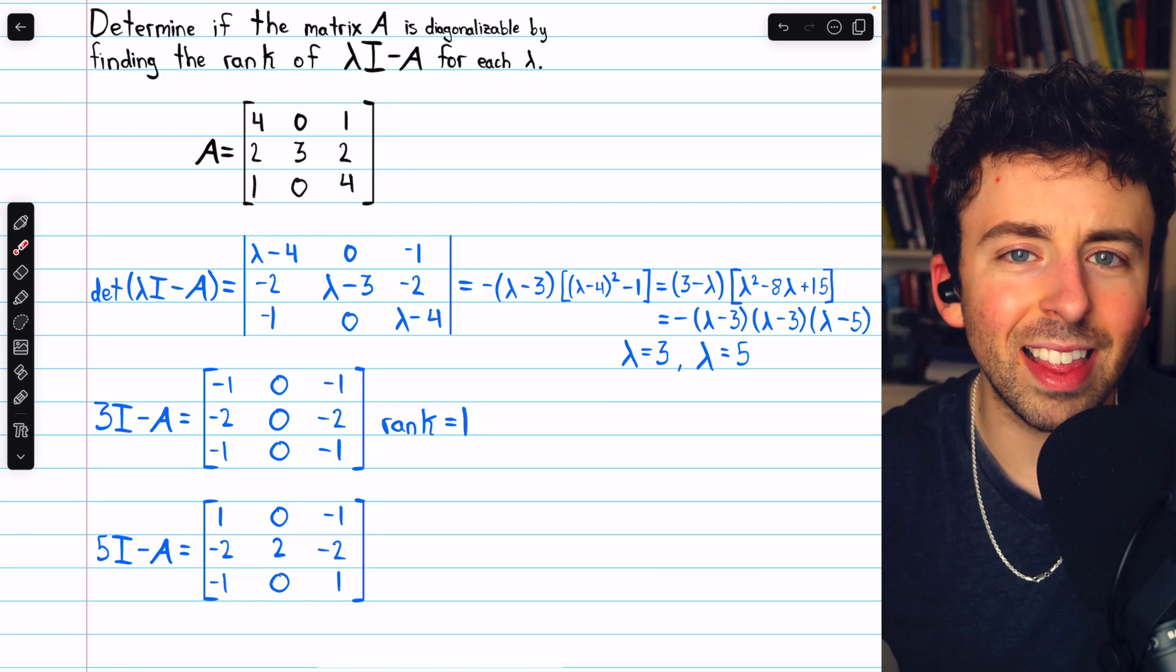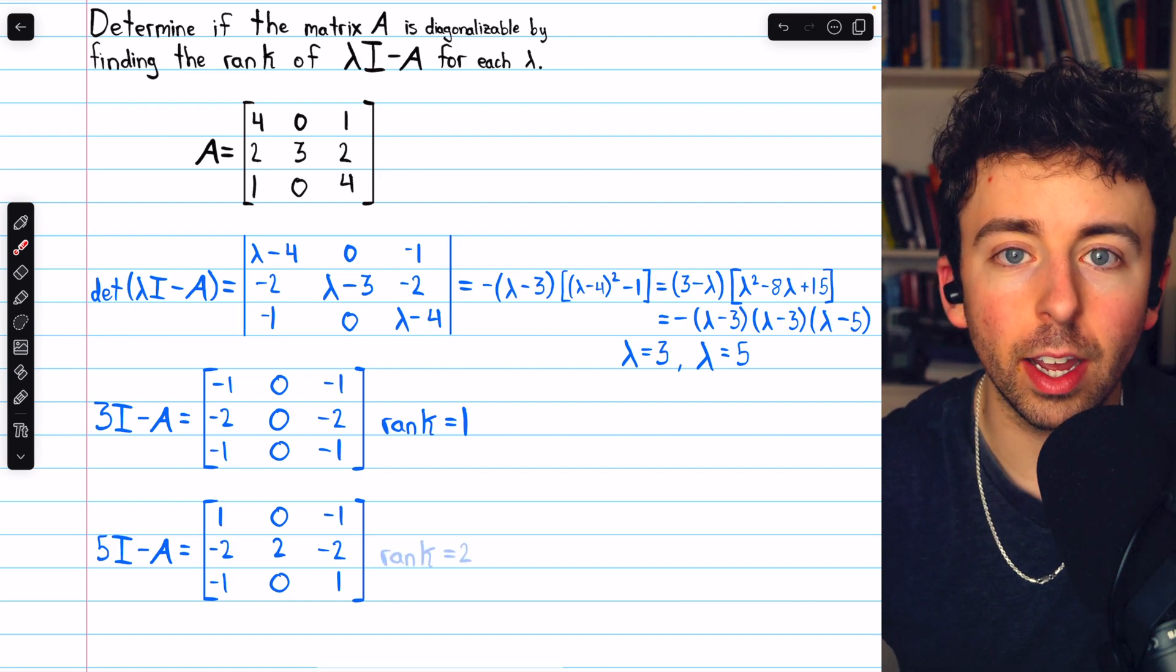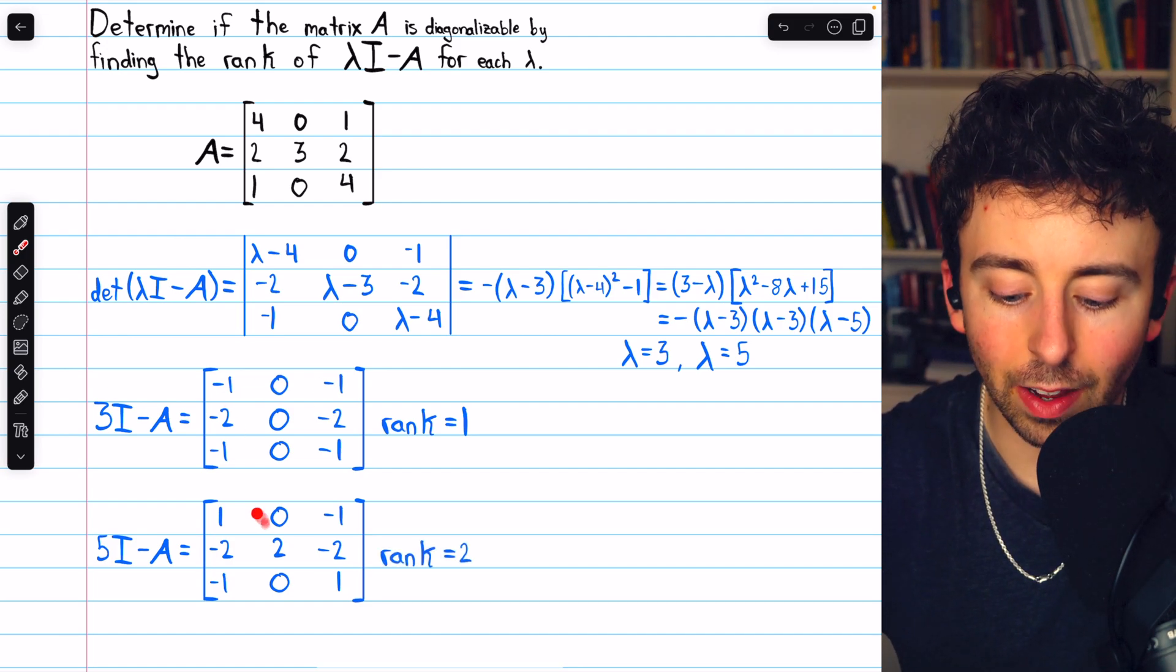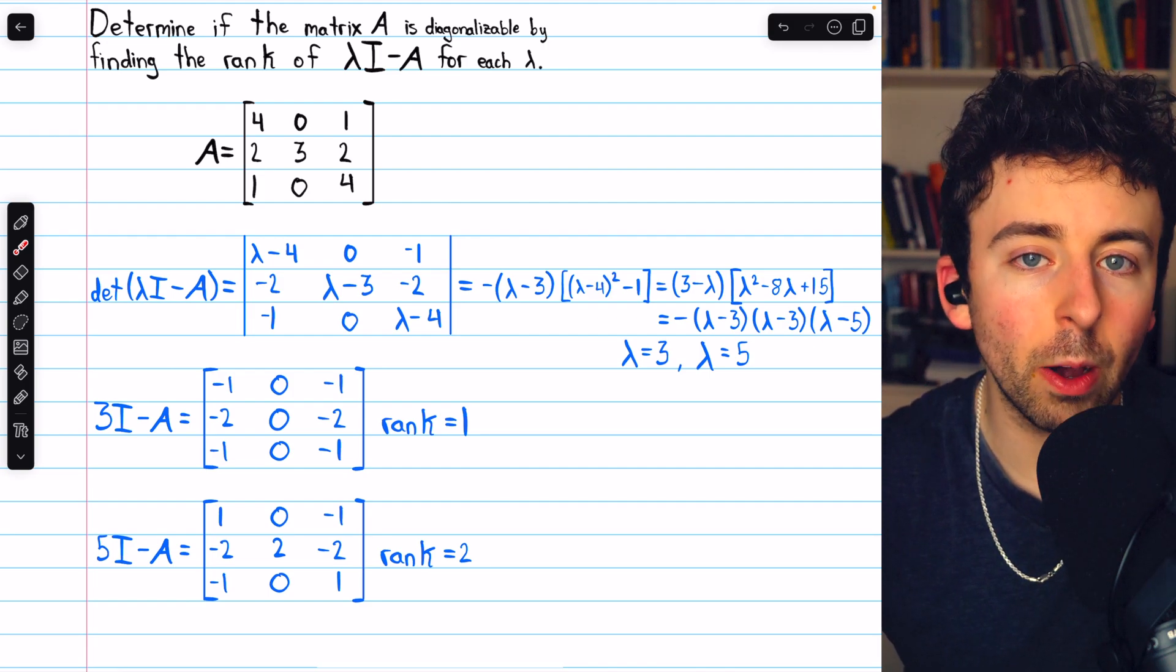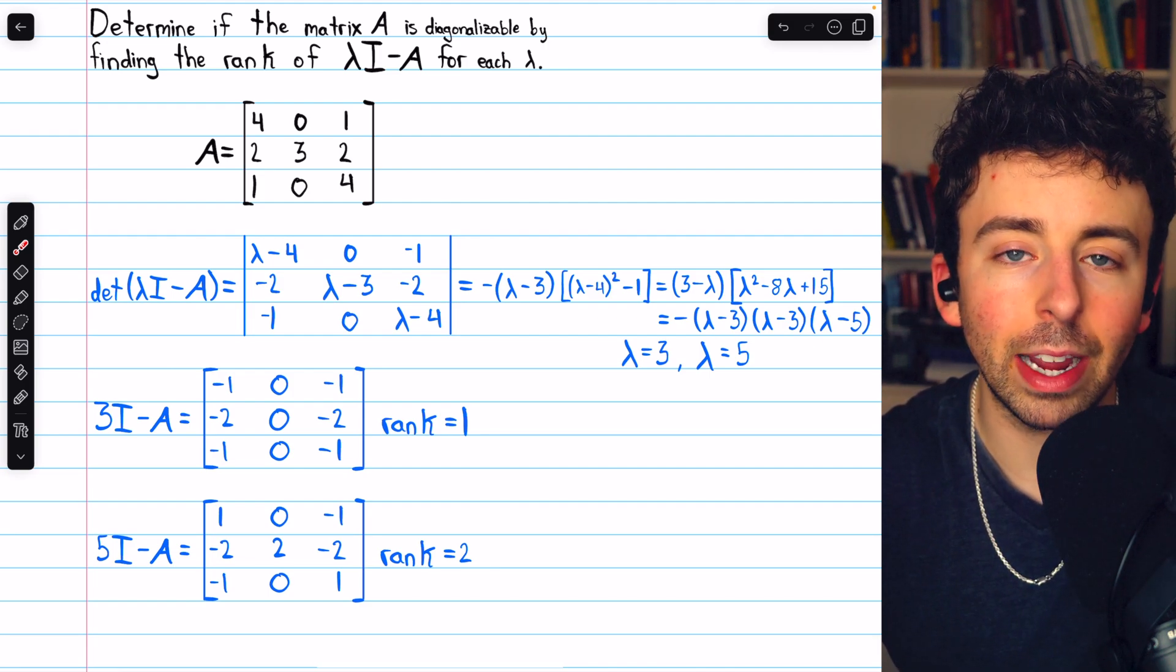Now, how do we use that to determine if our matrix is diagonalizable or not? It comes down to the nullity of these two matrices, because really what we're trying to do is count the number of linearly independent eigenvectors.